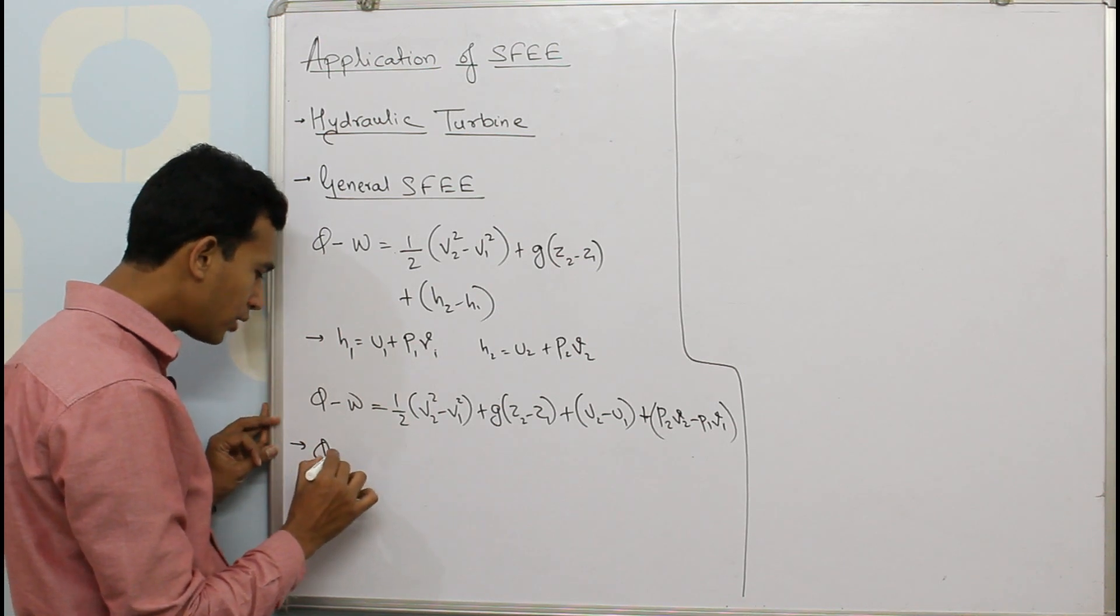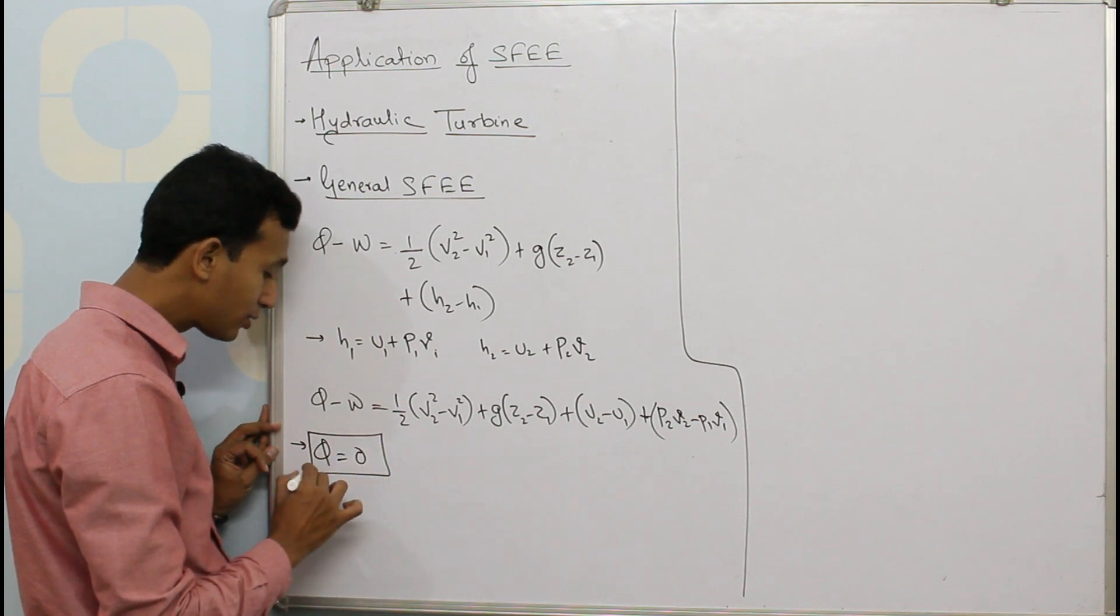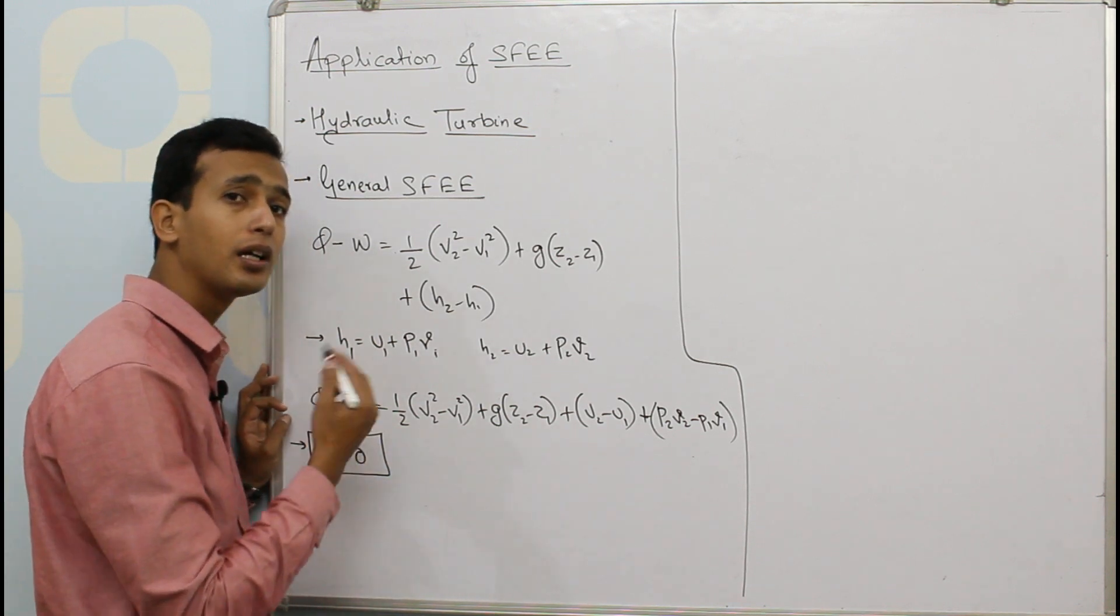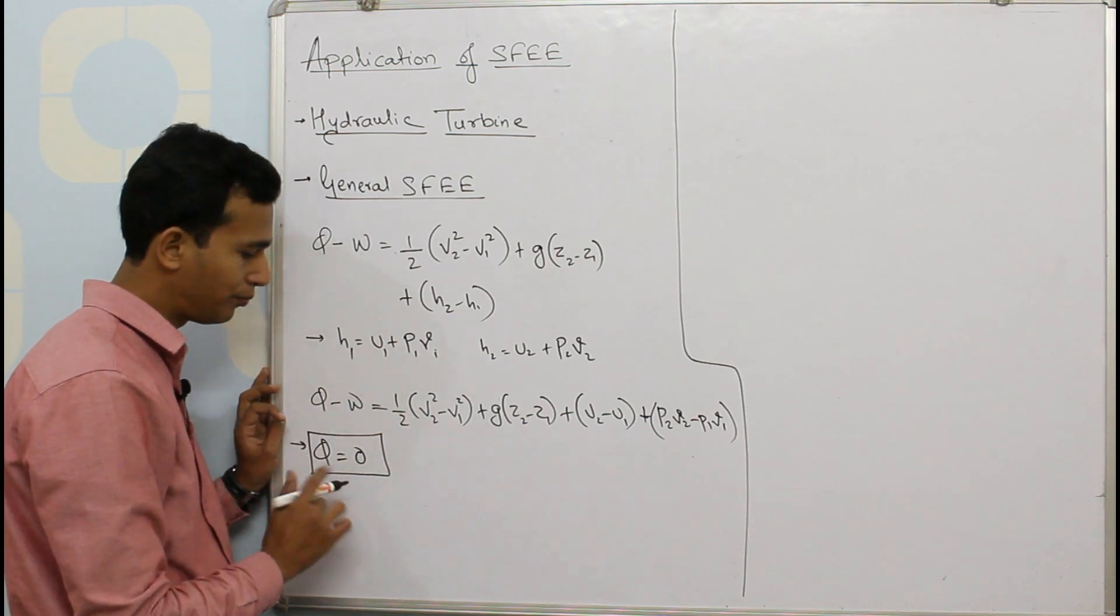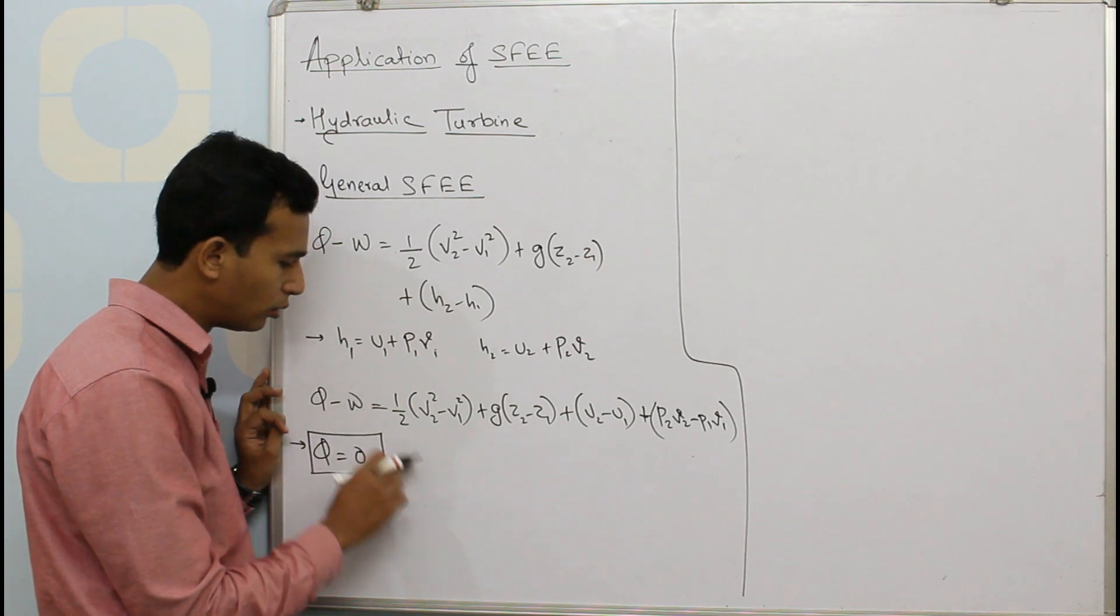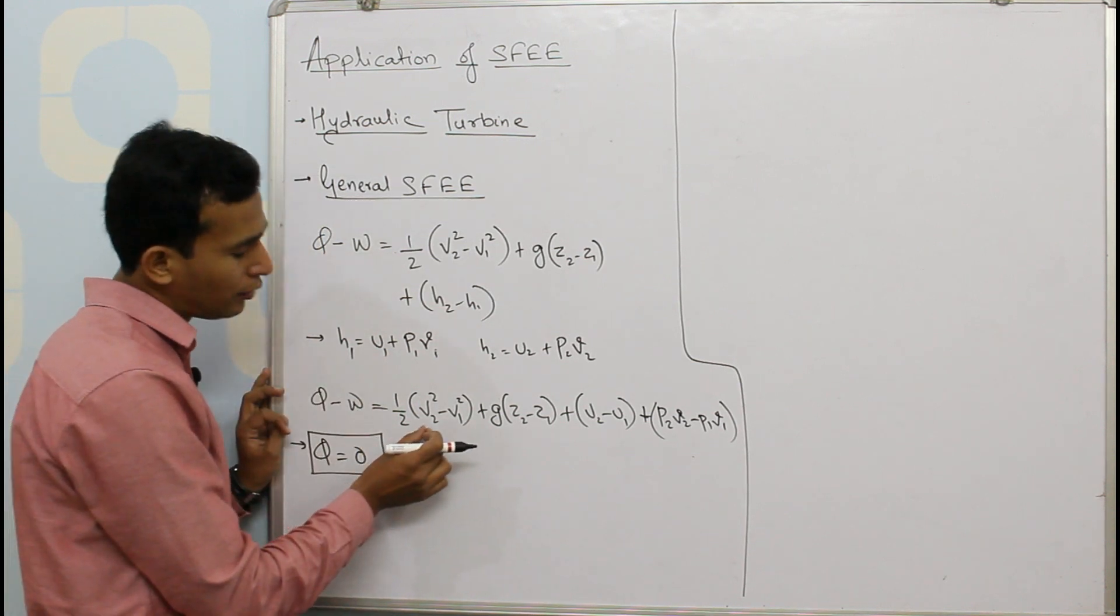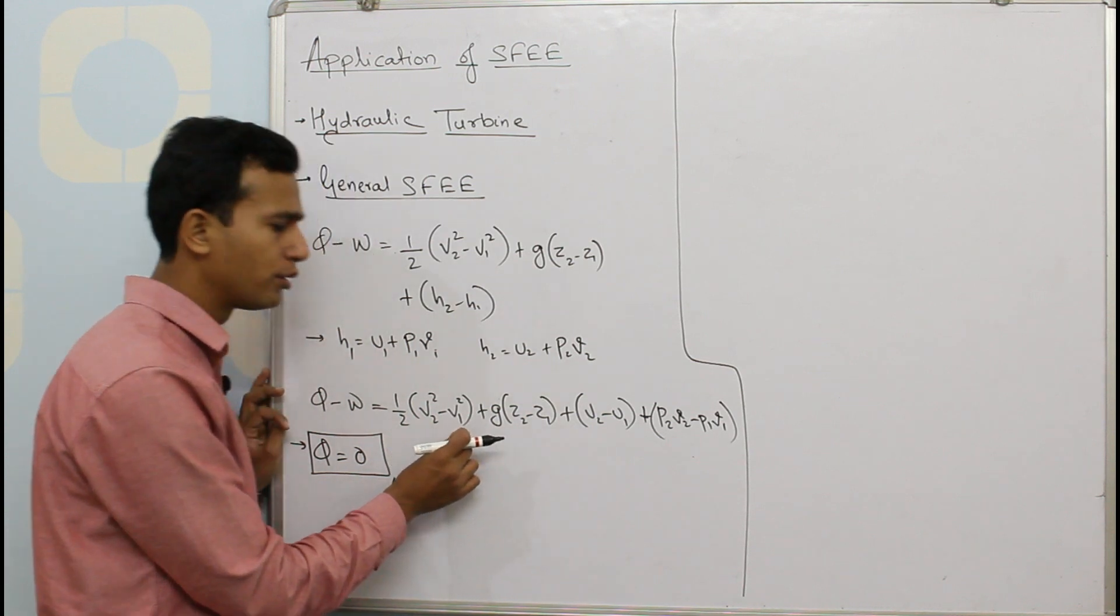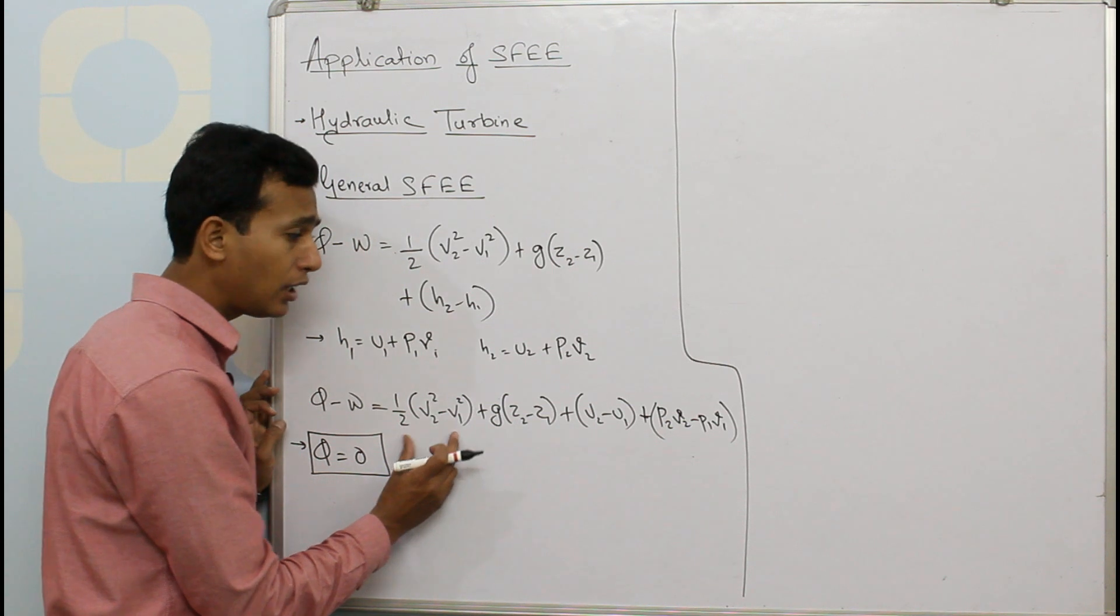As far as Q is concerned for a hydraulic turbine, Q is neither supplied nor removed from the system so heat interaction is zero. Now work is going to be produced so W will be positive so we don't neglect W here.